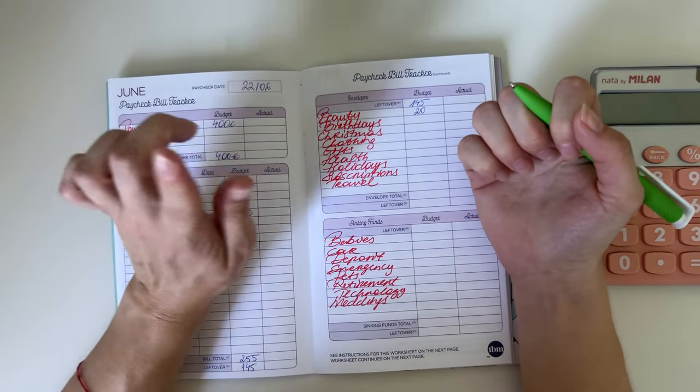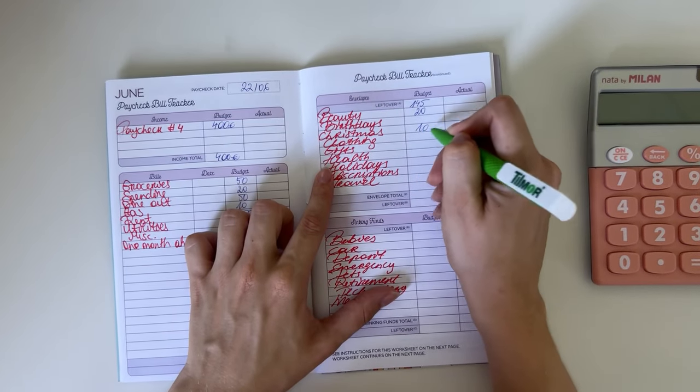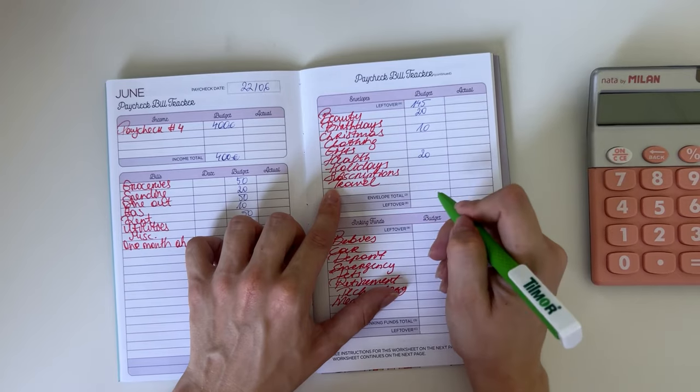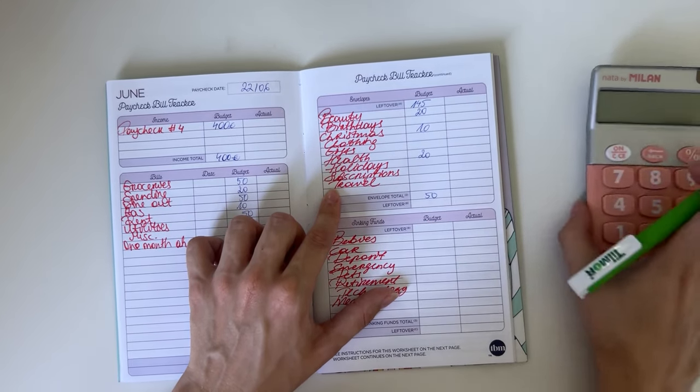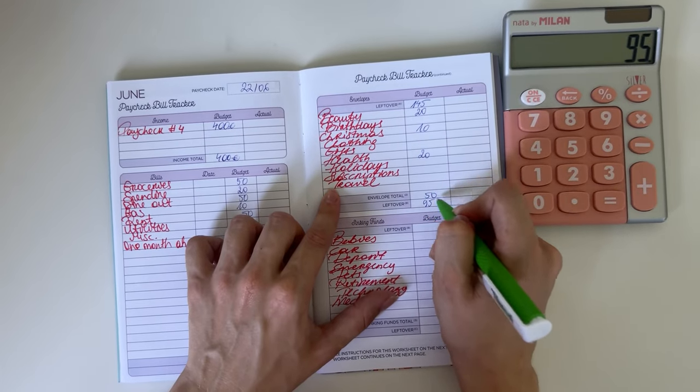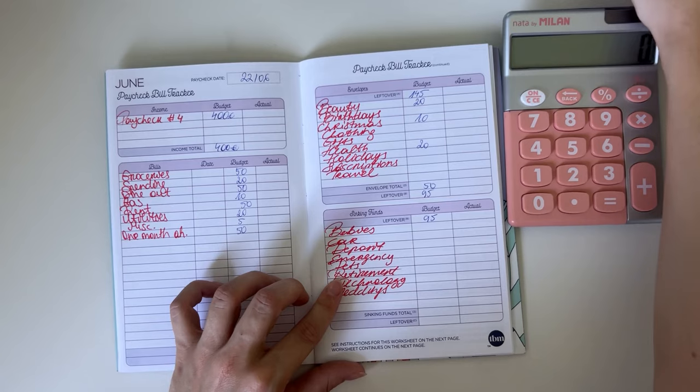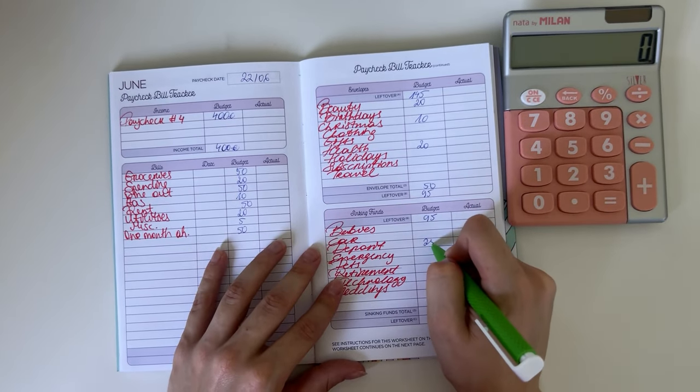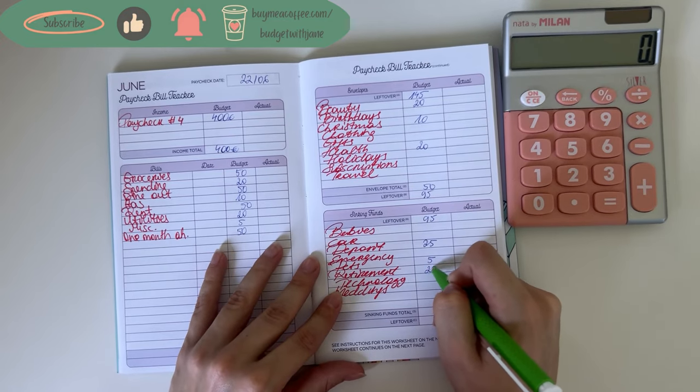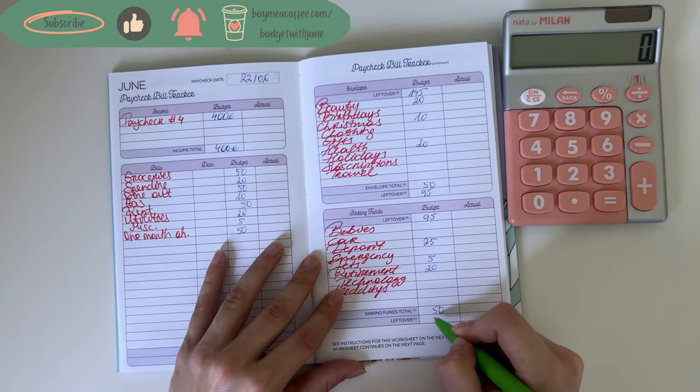Short-term sinking funds: beauty is going to get 20, Christmas is going to get 10, health 20, so that's 50 in total. 145 minus 50 is 95 left to work with. Long-term sinking funds: we're putting 25 in deposit, 5 into pets, 20 in retirement. That's 50, leaving us with 45 to work with.